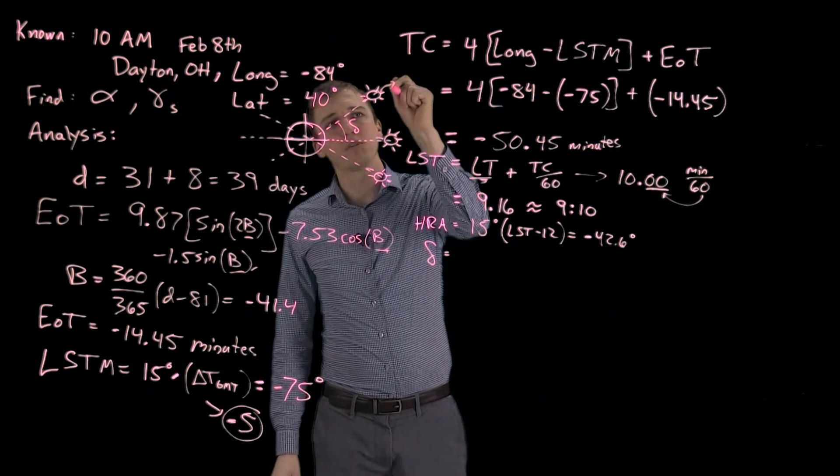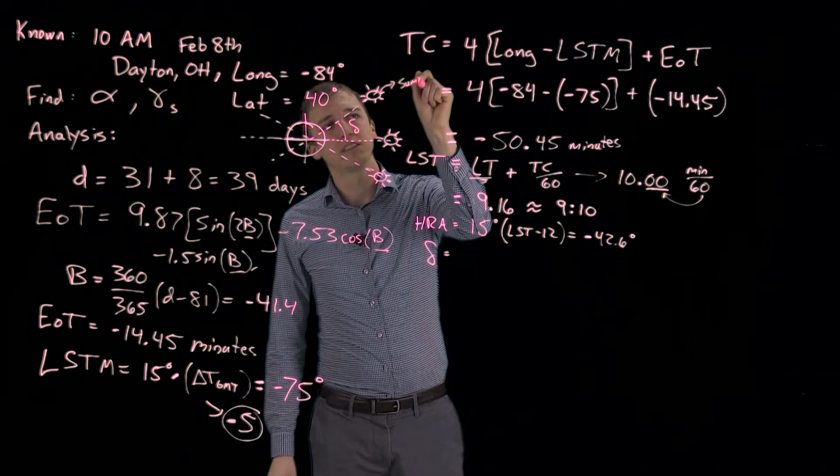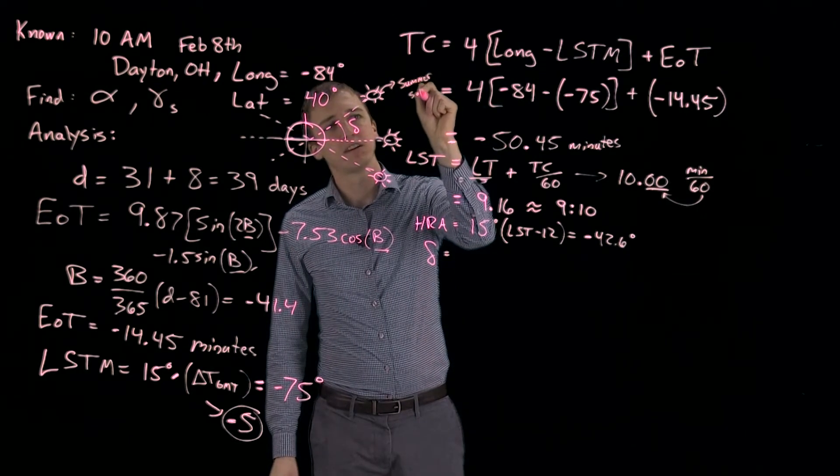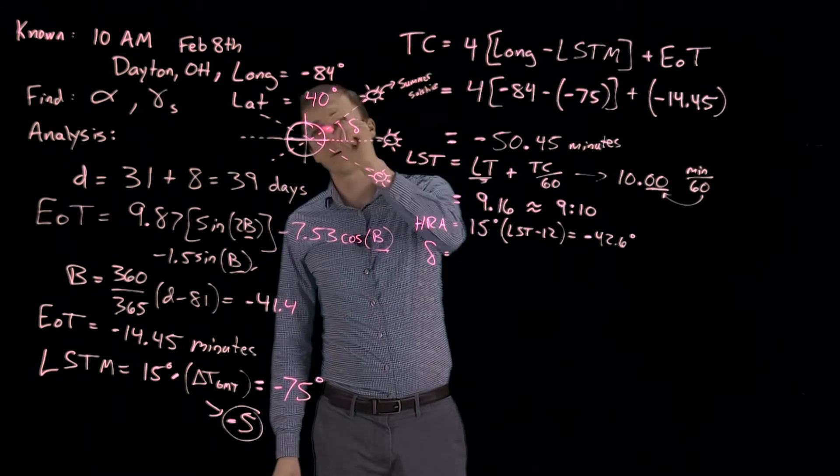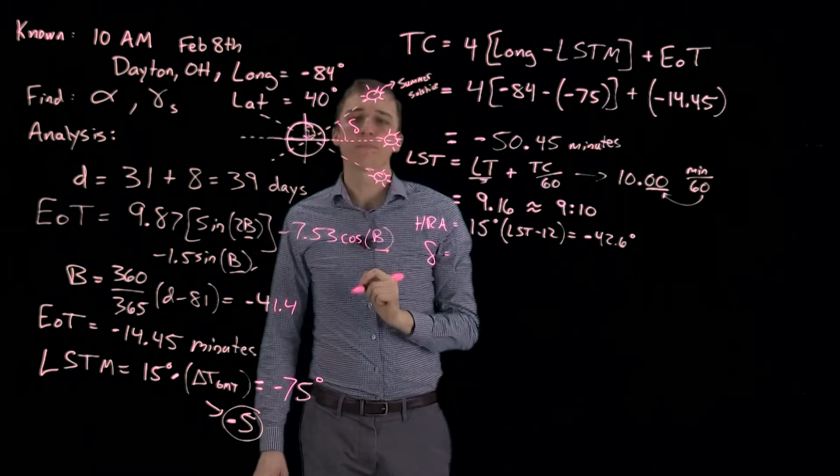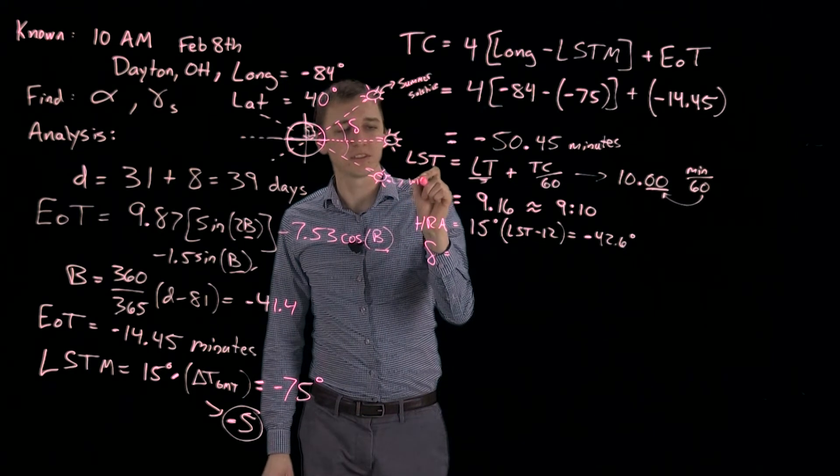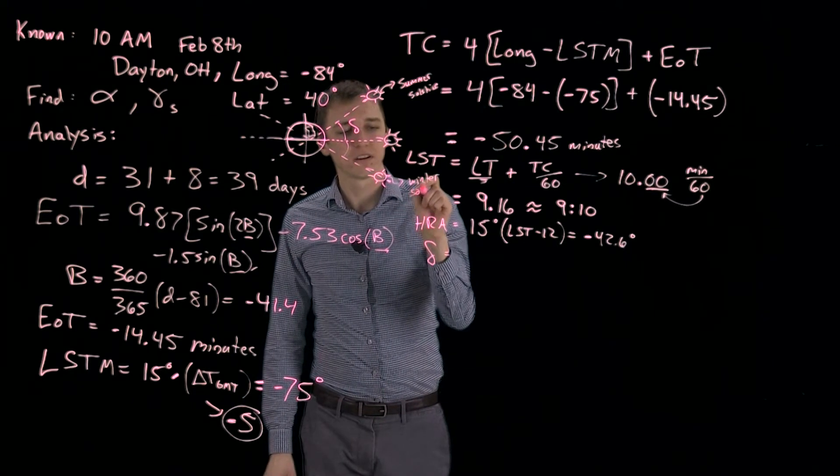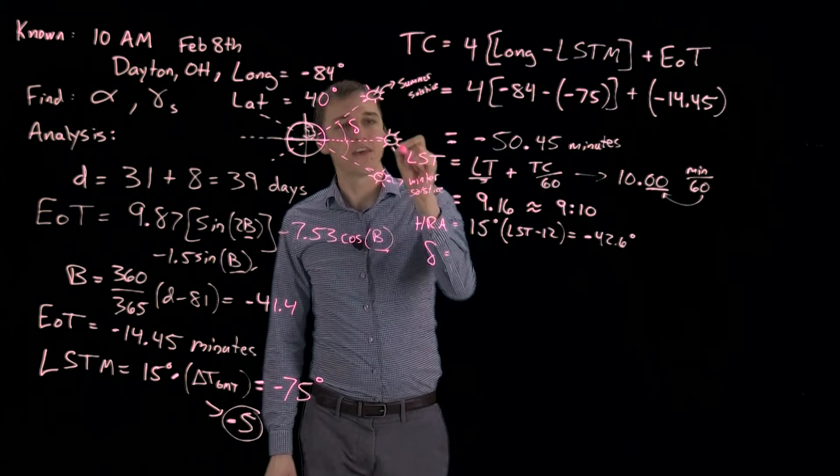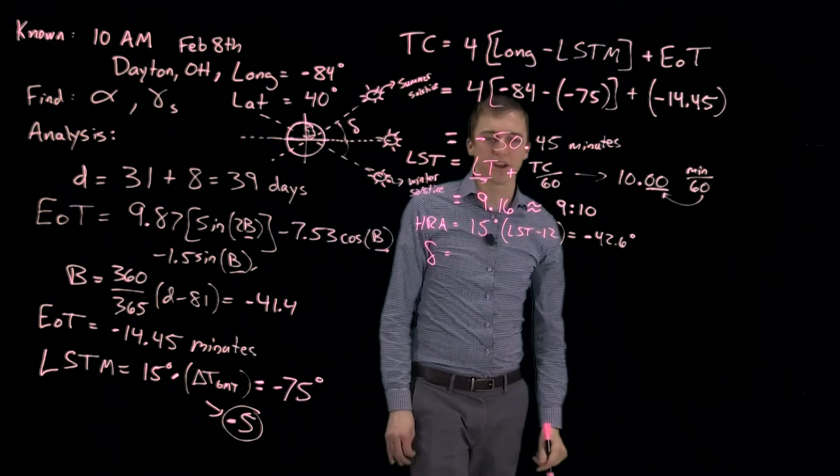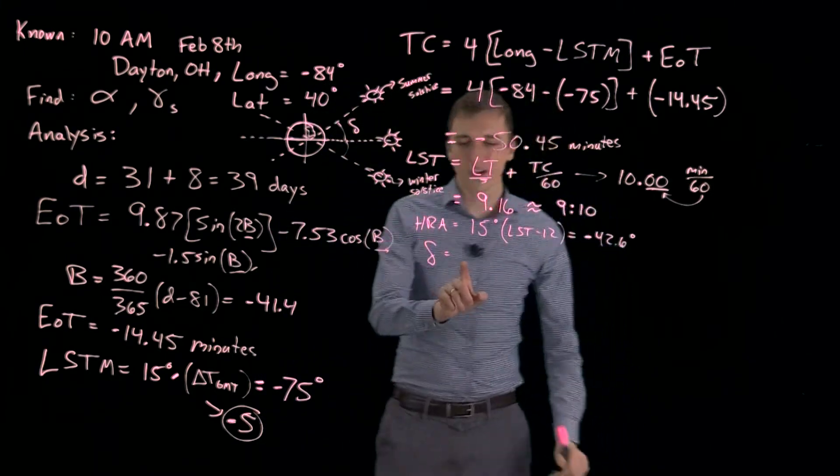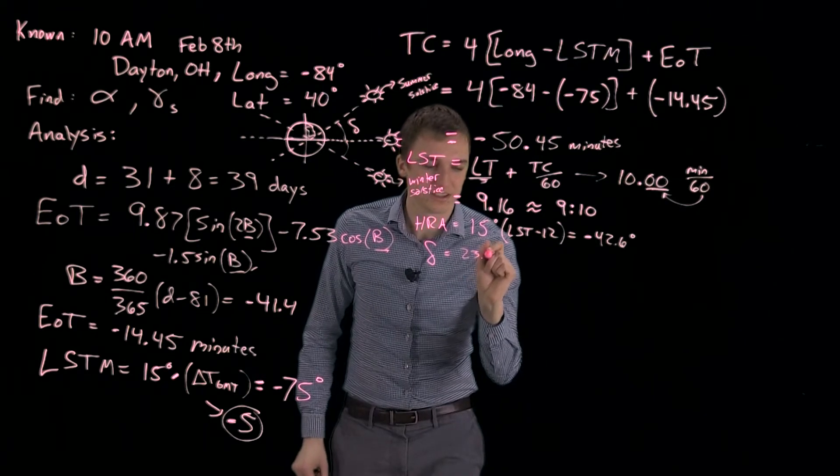This spot corresponds to the summer solstice in the northern hemisphere. So this is us right here. And this right here, this is the winter solstice. And then these would be the fall and spring equinox. Okay, so to find that declination angle, you multiply 23.45 degrees, which is the maximum it can be.